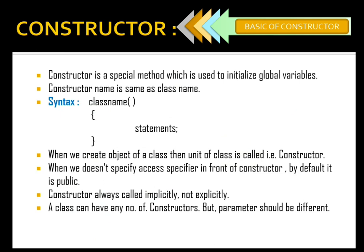A constructor is a special method which is used to initialize global variables, meaning it is used to initialize instance variables. The constructor name is the same as the class name — you have to remember that. The basic difference between a method and a constructor is that a method name should be different from the class name, but the constructor name should be the same as the class name. In syntax, we write the class name with function brackets, and inside curly braces we write some statements.